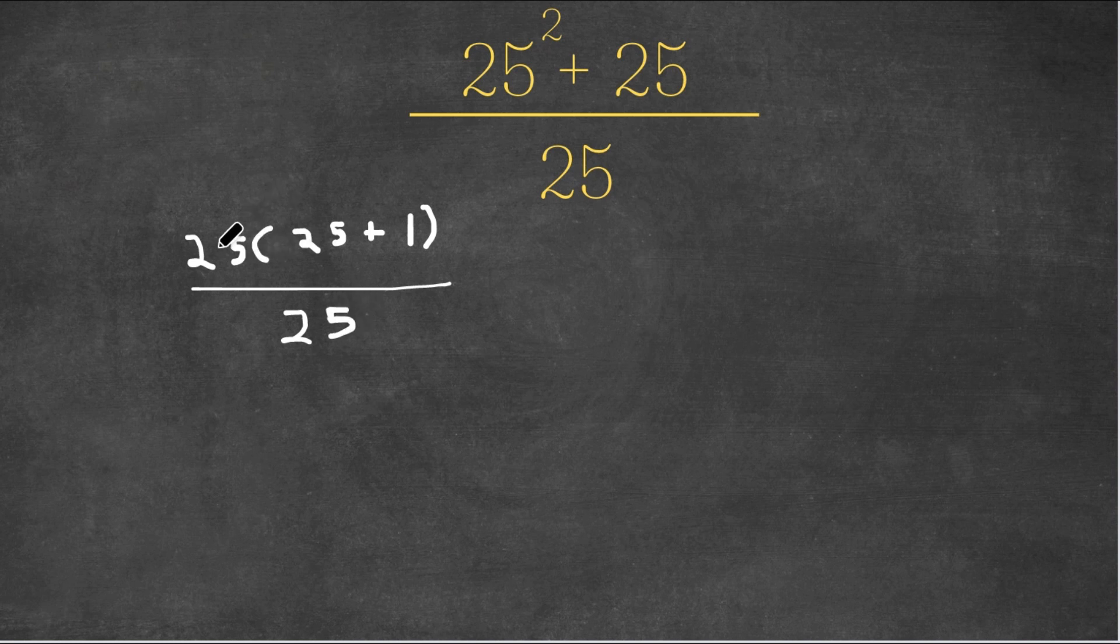And now, as you can see, 25 times 25 plus 1 over 25. Well, these two 25s can actually just cancel out. So if I cancel out these two 25s because they're the same number,